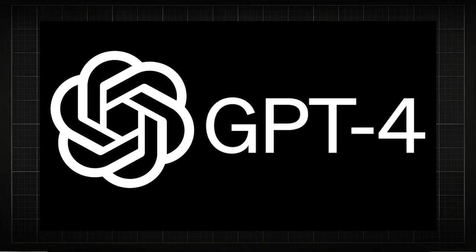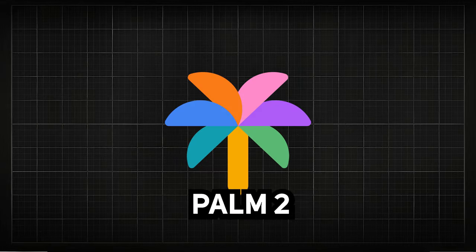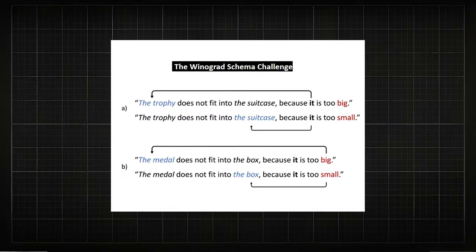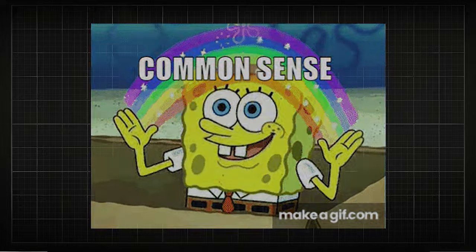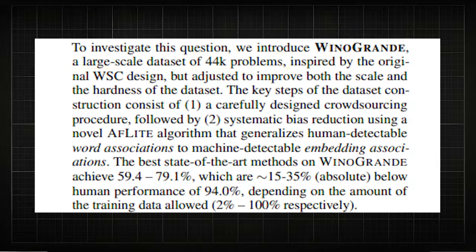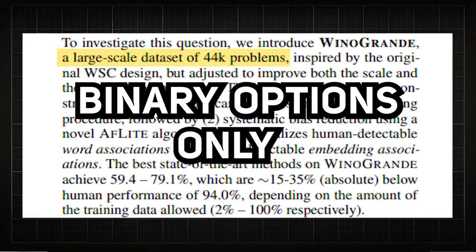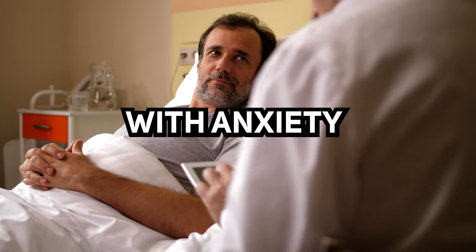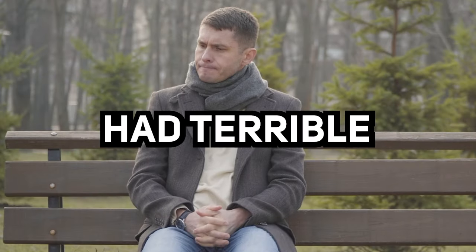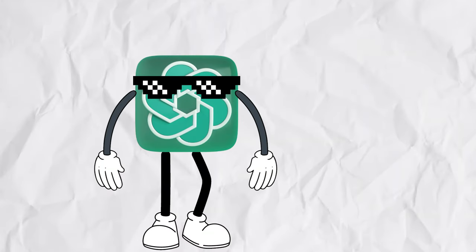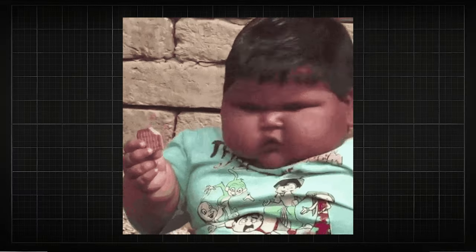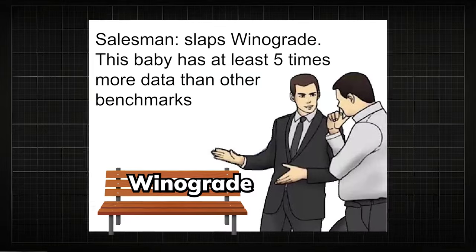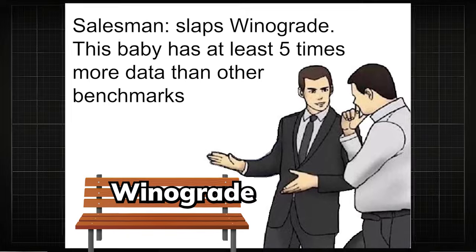For contrast, GPT-4 can now answer it with 95% accuracy and PaLM-2 at 87%. Next up, we have WinoGrande, which is inspired by the Winograd Schema Challenge. It is also a common-sense reasoning benchmark that consists of 44K fill-in-the-blank problems, but with binary options only. For example: 'The doctor diagnosed Justin with bipolar and Robert with anxiety. Blank had terrible nerves recently' — and the AI chooses between Justin and Robert. While it is a 50-50 chance to get the right answer, it is still a pretty robust benchmark since it has at least 5 times more data than other benchmarks.